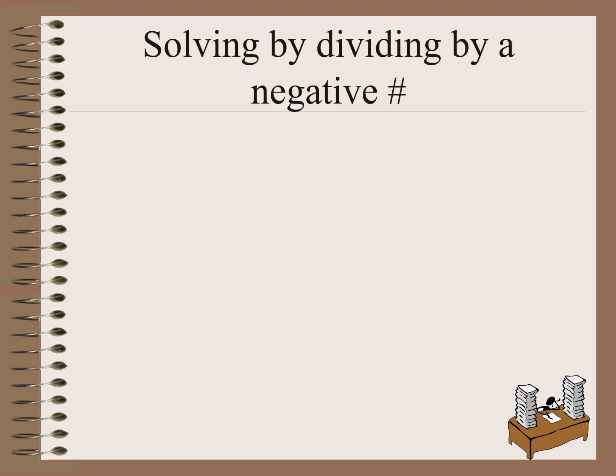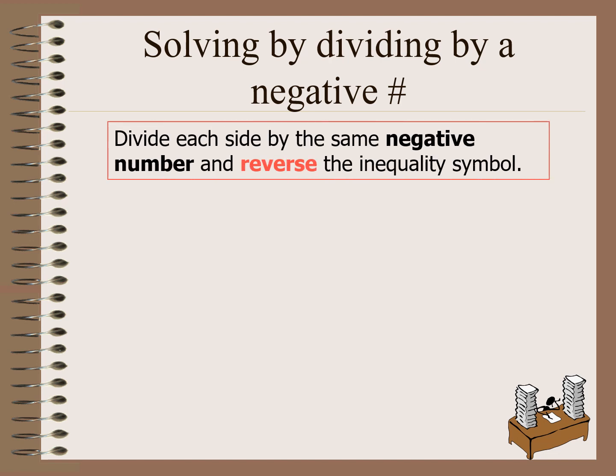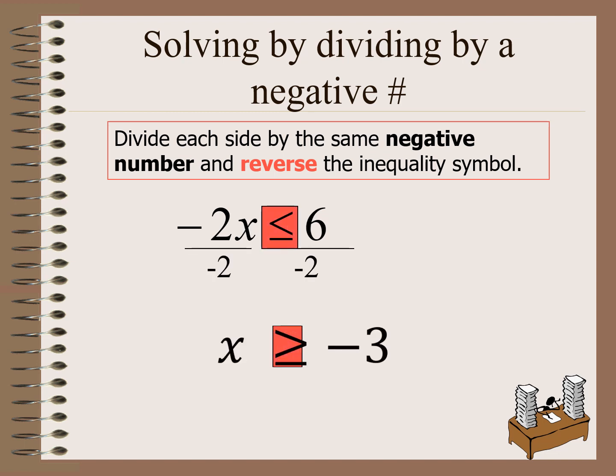Now let us have an example by dividing by a negative number. We divide each side by the same negative number and reverse the inequality symbol. If we have negative 2x less than or equal to 6, dividing both sides by negative 2 gives x is greater than or equal to negative 3. Take note: it turns from less than or equal to, to greater than or equal to.